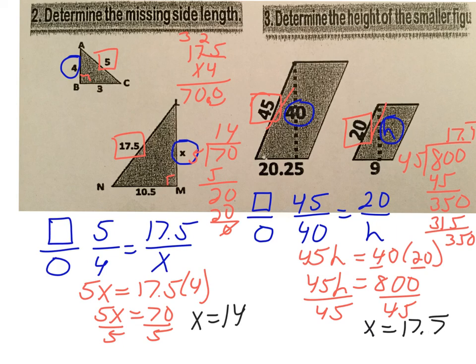Now if you go back, that is a reasonable answer. Because look, 45 is a little bit bigger than 40. So 17.7, a little bit smaller than 20. Those are in comparison.